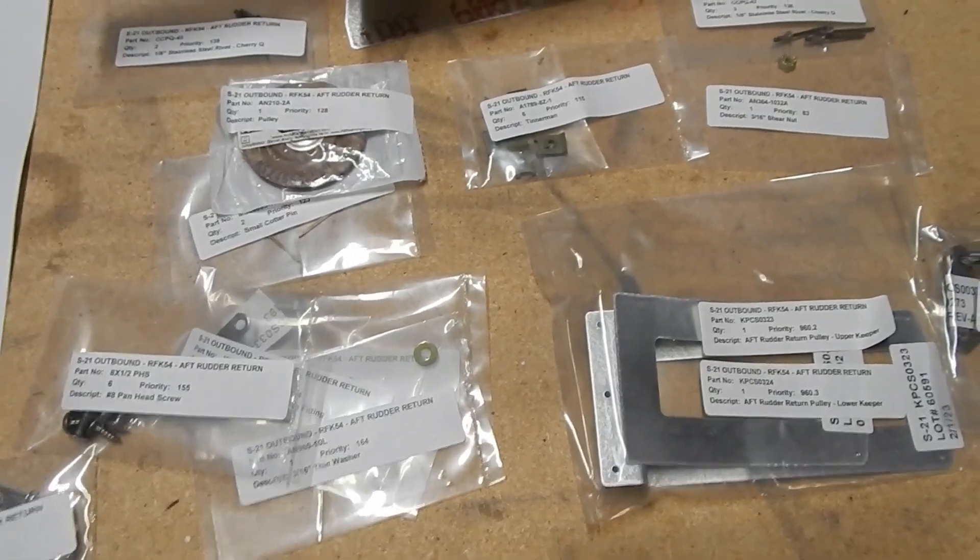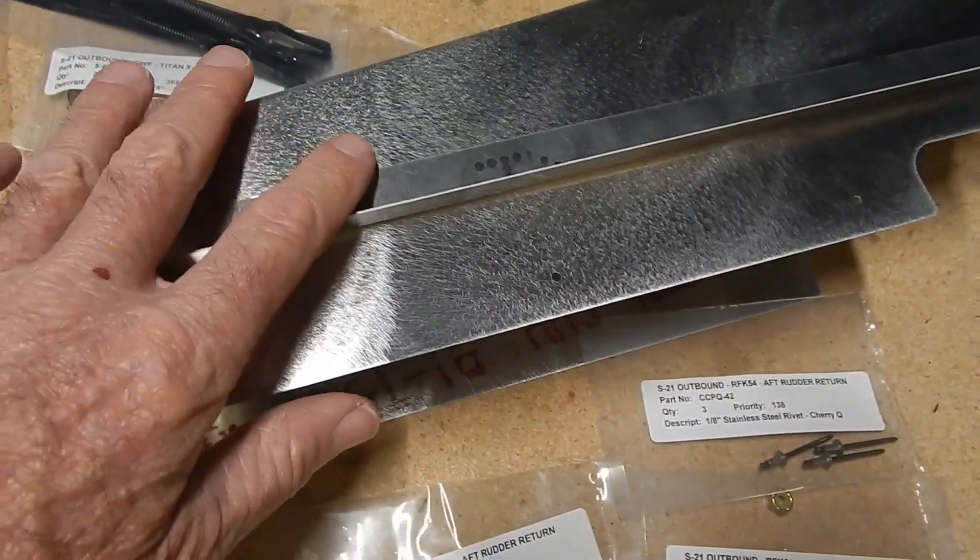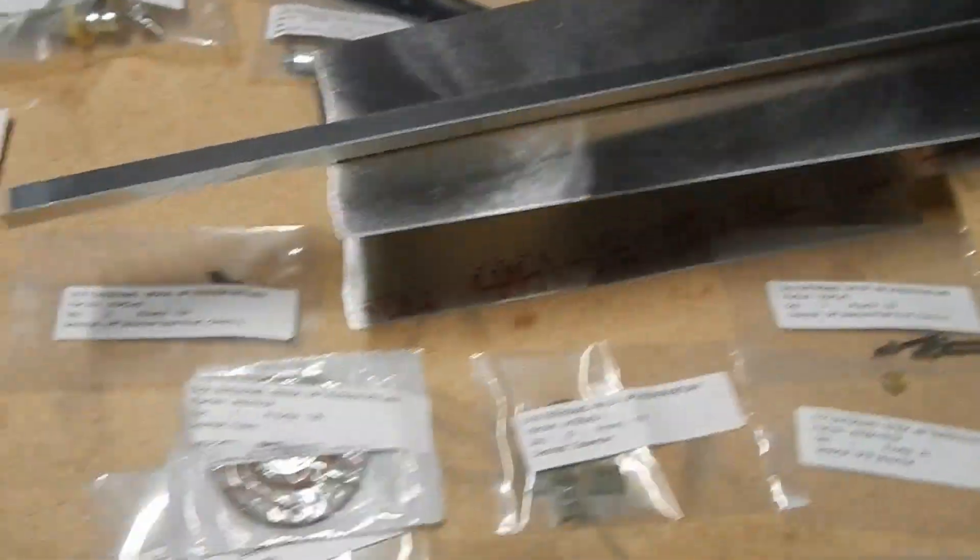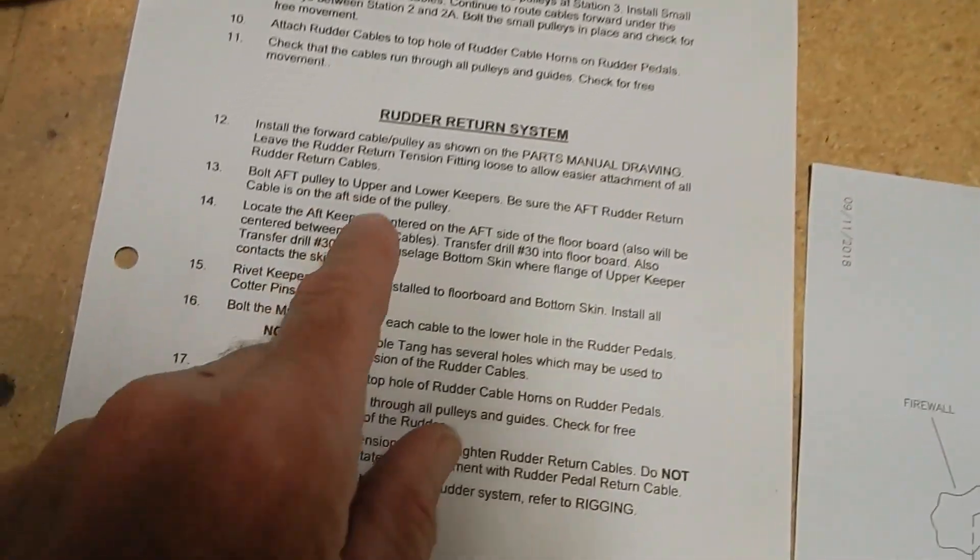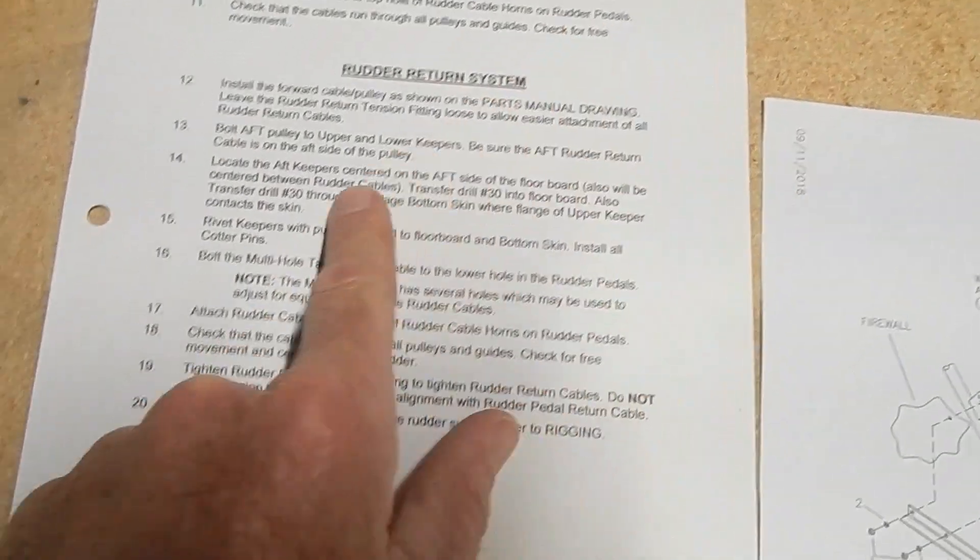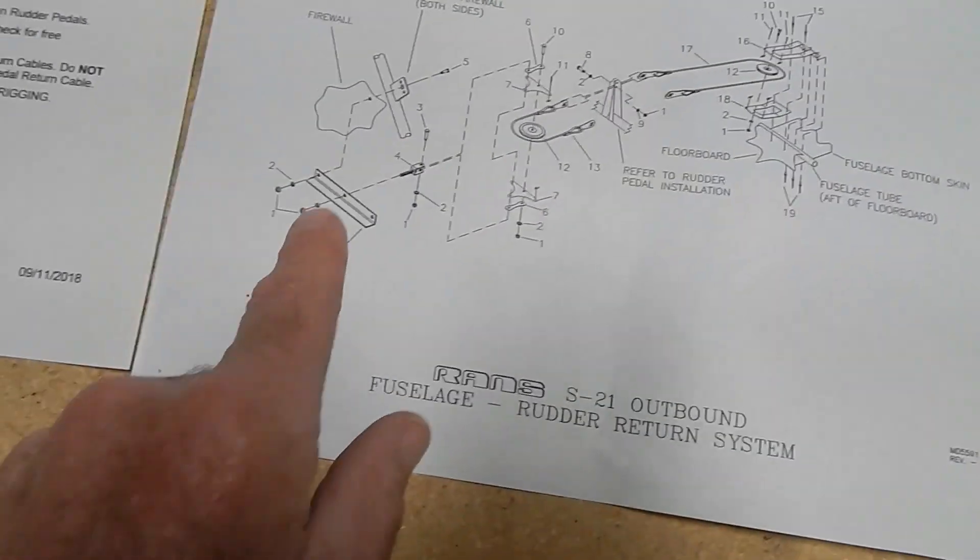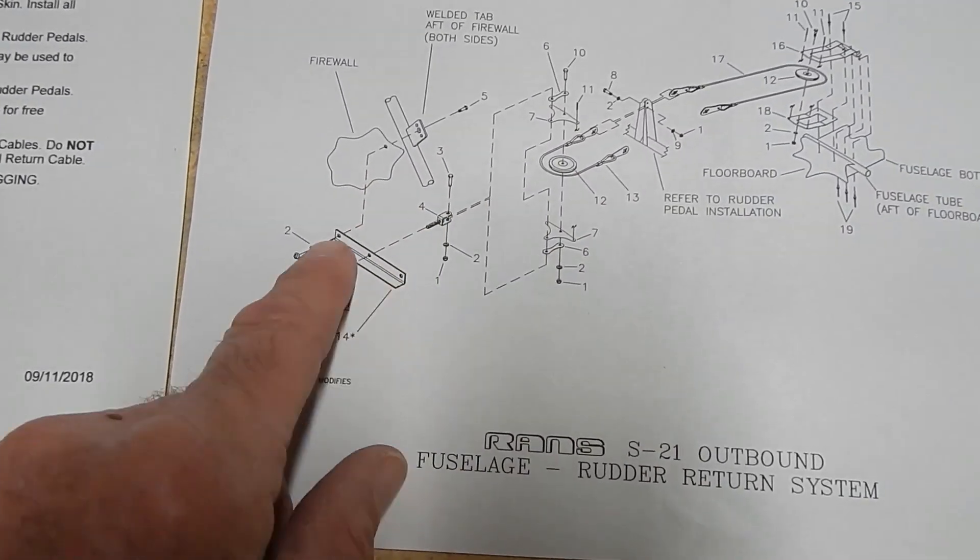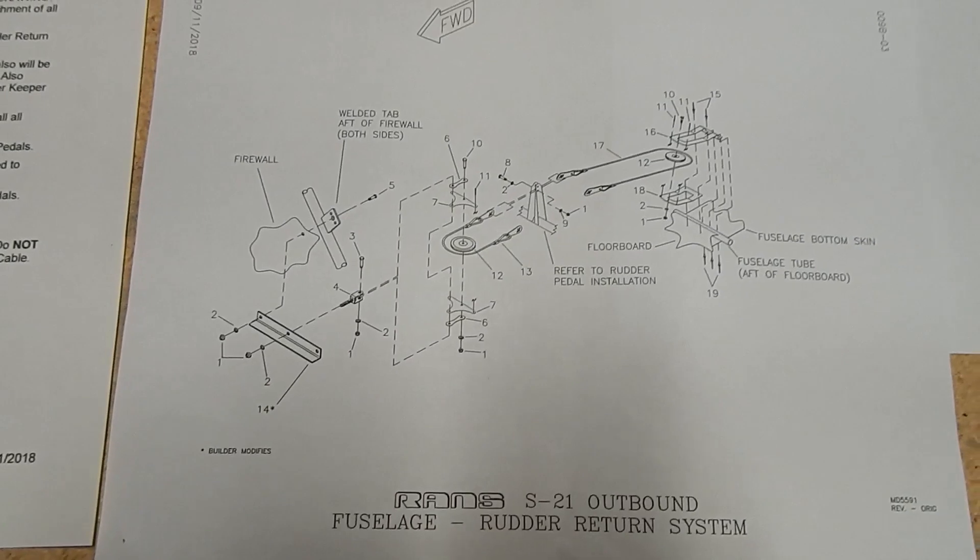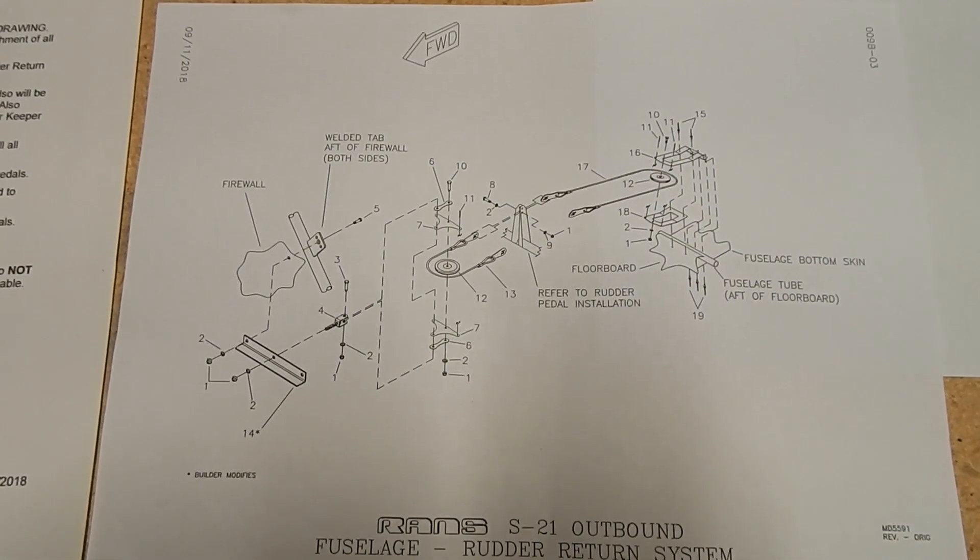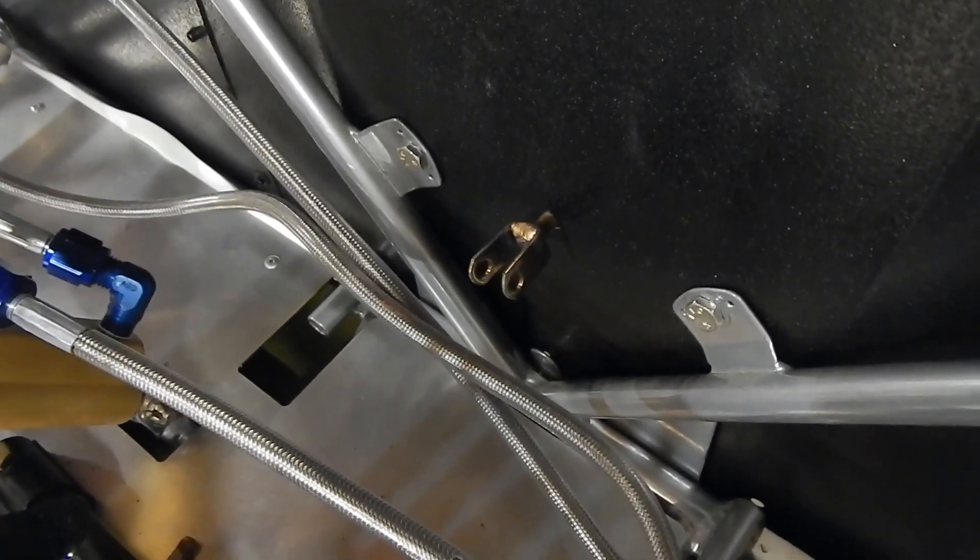The rudder return kit included pulleys, parts, hardware, rivets, cables, a closeout, a piece of material for fabrication, a parts diagram, rudder return parts list, and the text was already in my manual on page 104. And it says to start with installing the forward cable pulley, which is up in this area. So I'll just start. I guess I got to fabricate this piece, get a bit of hardware on there, and get this forward pulley attached to the firewall. I guess that's what they mean by the forward pulley.